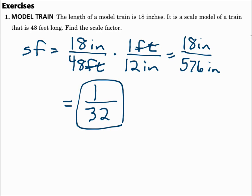If you have different units, make sure you use a conversion factor to cancel out one of the units, giving you only one unit to work with so that it's the same for each part. Reduce it. Make sure that it's model length over the real length.